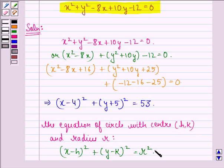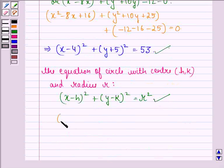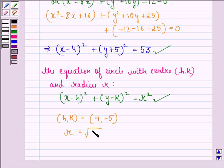Now if we compare this equation to this equation we get the point h, k is 4, minus 5. Now here we have minus 5 because we need to express this as y minus k. So we will have y minus of minus 5 and radius r equals to root 53.